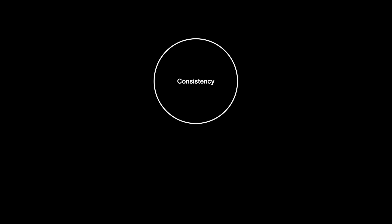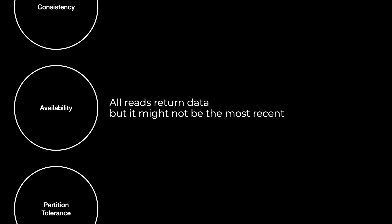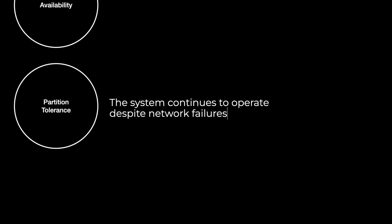I have a deep dive on the CAP theorem that I will link, but let's do the TLDR version. In the CAP theorem, you have three important parts: consistency, availability, and partition tolerance. Consistency means that if you try to read data, you will always get the most recent version of the data, or an error. Availability means that you always get a response — it doesn't mean it is the most recent version. And partition tolerance is related to whether the system keeps working when there's a network problem between the nodes.